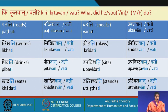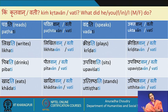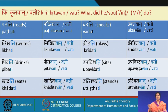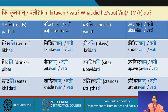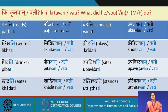Looking at a few more verbs in the simplified past: pathati becomes pathitavaan or pathitavaati; likhati becomes likhitavaan or likhitavaati; pibati becomes peetavaan or peetavati; khadati becomes khaditavaan or khaditavati; vadati becomes ukhtavaan or ukhtavati; kridati becomes kriditavaan or kriditavati; upavishati becomes upavishtavaan or upavishtavati; uttishtati becomes utthitavaan or utthitavati. Study this table and familiarize yourself — this is all in the simplified past form.